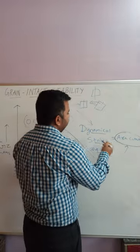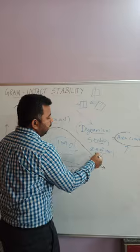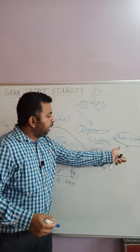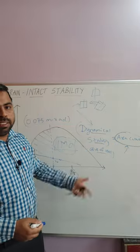Because when you want to calculate dynamical stability at a certain angle of heel, it is the area under the curve multiplied by the displacement. If your area under the curve is larger, dynamical stability is larger.